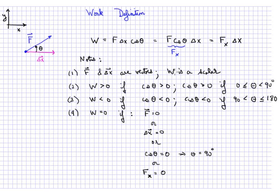W, however, is a scalar. There's no vector relationship here. There is simply the magnitude of F and the magnitude of delta x and the cosine of the angle in between.